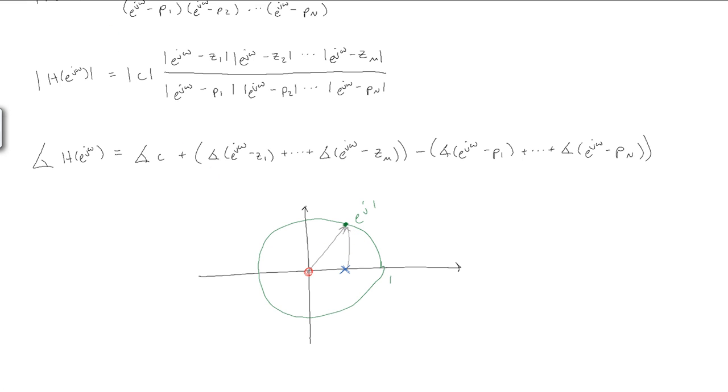We're just going to look at their magnitudes, m1 and m2, and at their angles, phi1 and phi2. So the magnitude of h of e to the j1 is equal to m1 over m2.